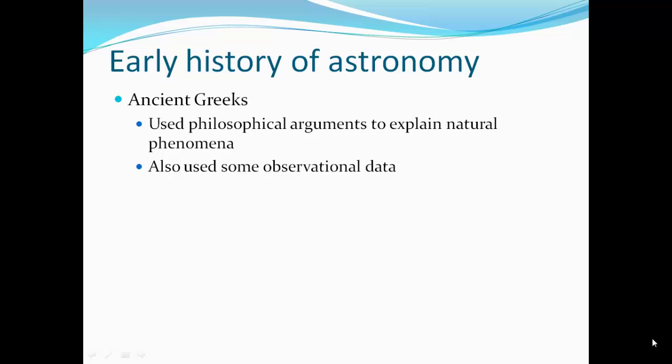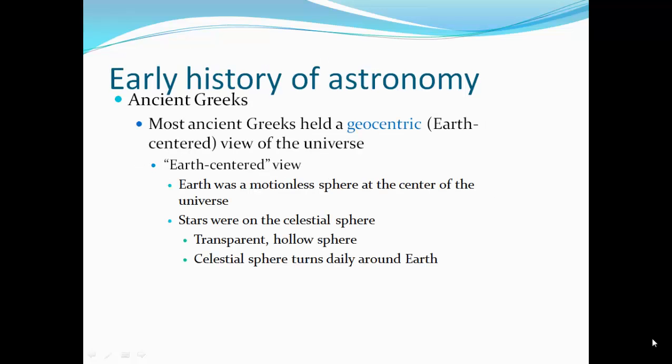The ancient Greeks used philosophical arguments to explain natural phenomena. They also used some observational data. Most ancient Greeks had a geocentric view of the universe. In the Earth-centered view, the Earth was a motionless sphere at the center of the universe. Stars were on a celestial sphere, which is a transparent hollow sphere around the Earth, and the celestial sphere turned daily around the Earth.